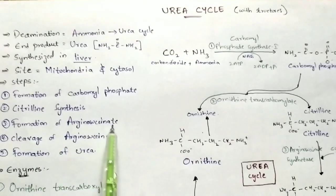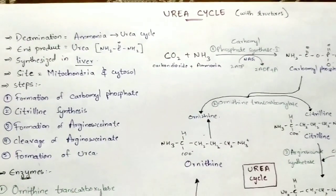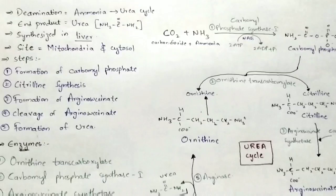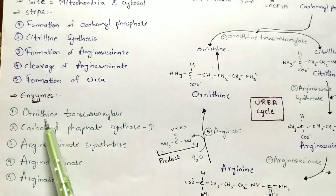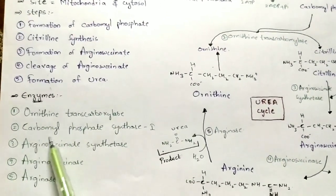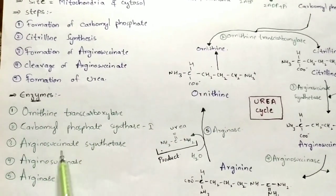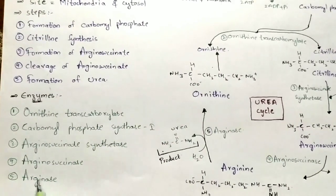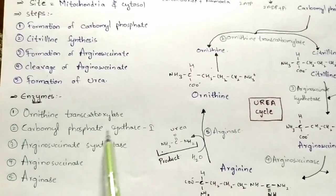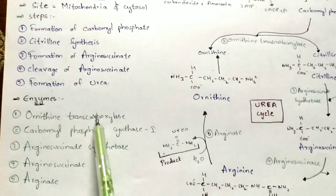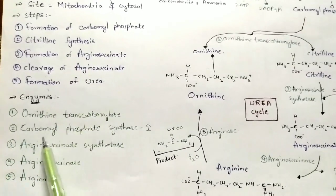There are totally five steps in the urea cycle: formation of carbamyl phosphate, citrulline synthesis, formation of arginosuccinate, cleavage of arginosuccinate, and formation of urea. The enzymes used are carbamyl phosphate synthase 1, ornithine transcarbamoylase, arginosuccinate synthase, arginosuccinase, and arginase.